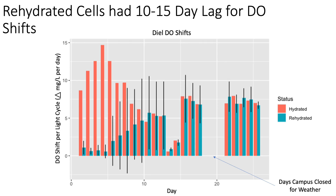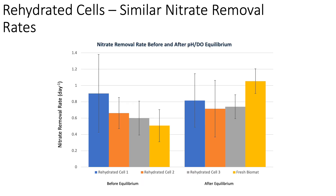The experiment appears to show a lag of between 5 and 15 days for the rehydrated biomat to demonstrate similar diel fluctuations of pH as the consistently hydrated biomat. A similar lag of 10 to 15 days for dissolved oxygen can be seen as well. Regardless of the lag in biomat activity, all of the experimental cells removed nitrate at similar rates throughout the experiment. Though the exact removal pathway — whether assimilation or nitrate reduction — is not known, the removal of nitrate demonstrates the potential operational resilience of the design.